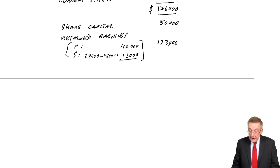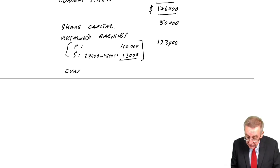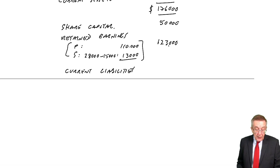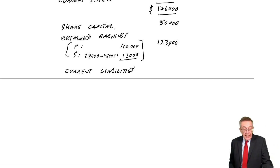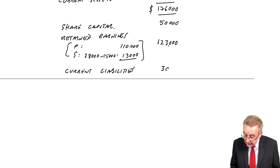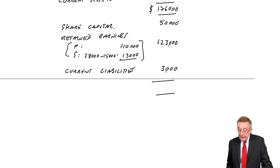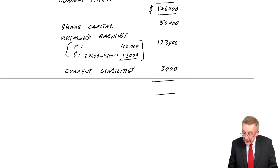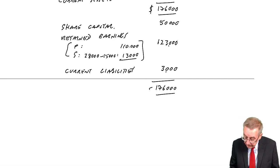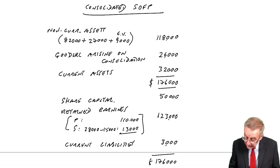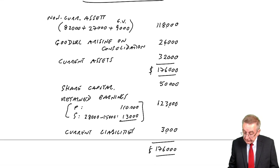Finally, the current liabilities add up as usual — £2,000 in P, £1,000 in S, so a total of £3,000. Does it add up? £176,000. Perfect.